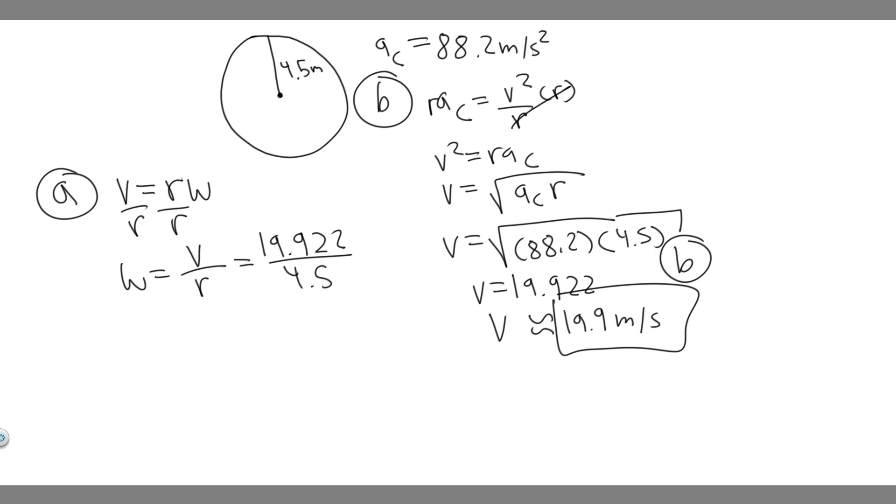You can round this to 4.43. The units are going to be radians per second, which is how we measure angular velocity. So omega or the angular velocity is 4.43 radians per second, which results in this centripetal acceleration. This is your answer to A, and that's your answer to B. Hopefully you found this useful.